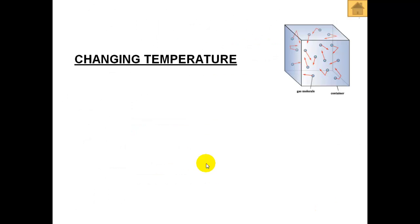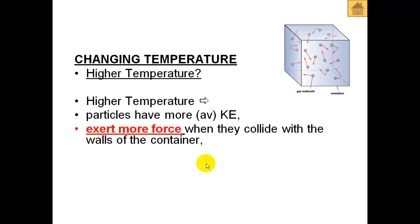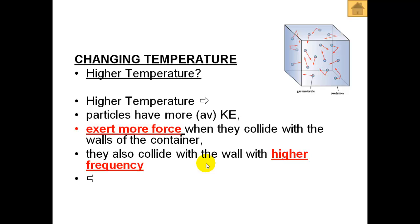What happens when we change the temperature? What happens if the temperature is higher? If we have a higher temperature, the particles have more average kinetic energy. If they have more average kinetic energy, they have more momentum, which means they will exert more force when they collide with the walls of the container. Also, since they are going faster, they will collide with the walls of the container with a higher frequency. Both of these factors will contribute to an increase in pressure.